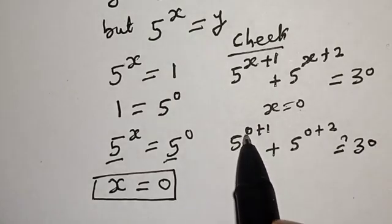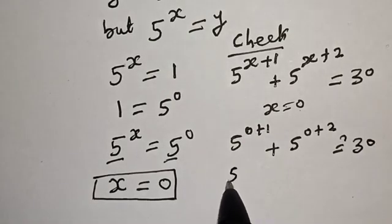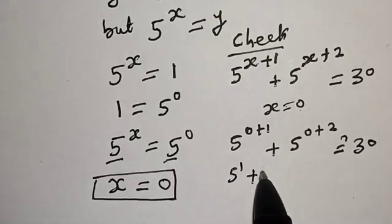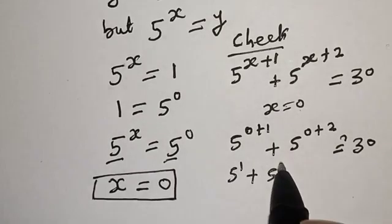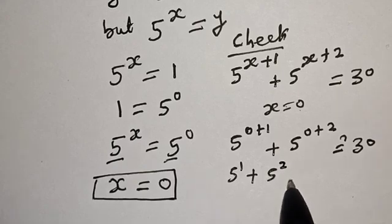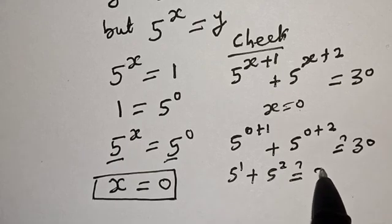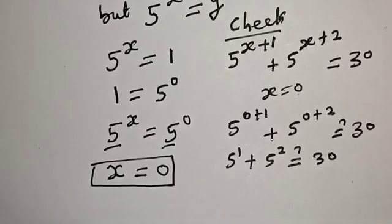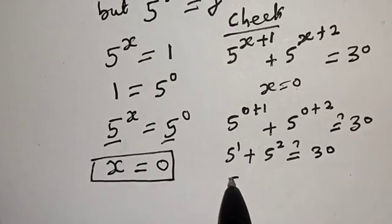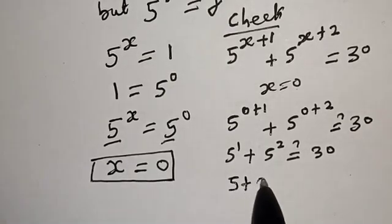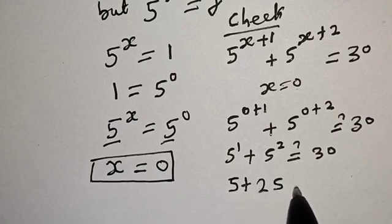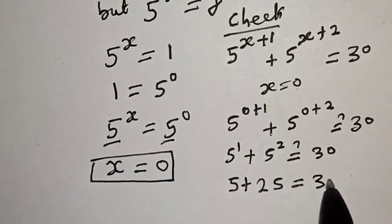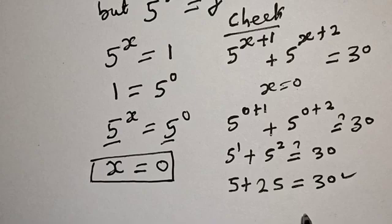5 raised to power 0 plus 1 is 5 raised to power 1, and 5 raised to power 0 plus 2 is 5 squared. So we have 5 raised to power 1, which is 5, plus 5 squared, which is 25. Adding them together gives 30, which equals 30. We satisfy the given equation at x equal to 0.